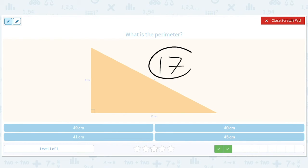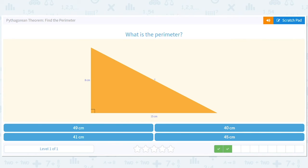Which makes 17 plus 8 is 25, and then 25 plus 15 is 40, so we're going to have 40 centimeters.